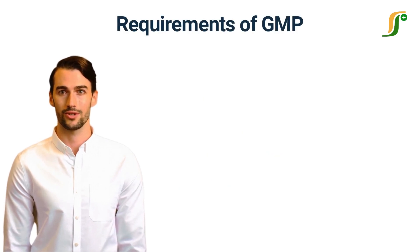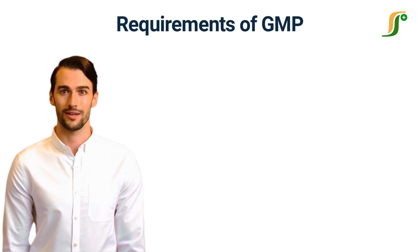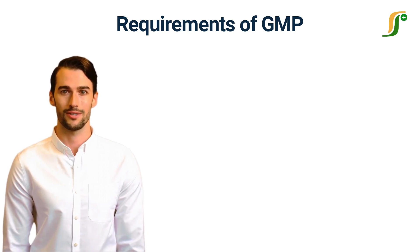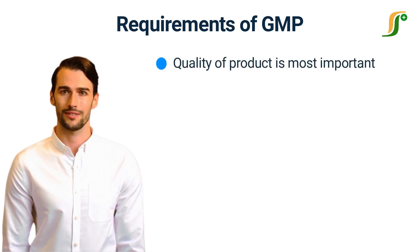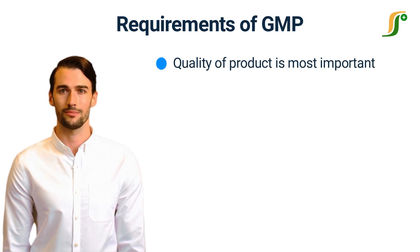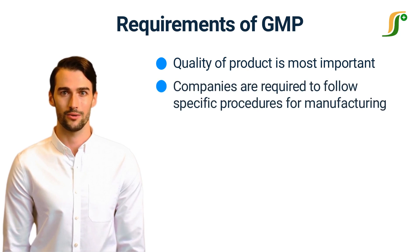Now let us know the requirements of GMP in pharmaceuticals. GMP is a set of guidelines, and these standards are mandatory to be followed by a pharmaceutical company to produce safe and quality products. The GMP is mainly based on the principles of safety and quality. The most important part of GMP is quality. Pharmaceutical products must be free from contamination and must comply with the standard specification. Manufacturing facilities are required to follow specific procedures for manufacturing pharmaceutical products, covering raw materials, equipment, and record maintenance for all activities.